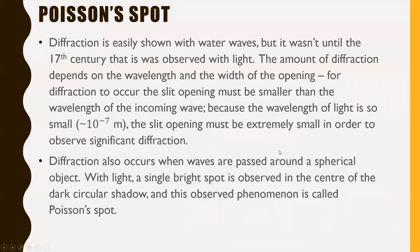This brings us to something called Poisson's spot. Diffraction is easily shown with water waves, but it wasn't until the 17th century that it was observed with light. Because normal visible light waves have such a small wavelength, the slit opening must be extremely small in order to observe significant diffraction. In other words, to get a diffraction pattern, you have to have a very small opening for that to work.